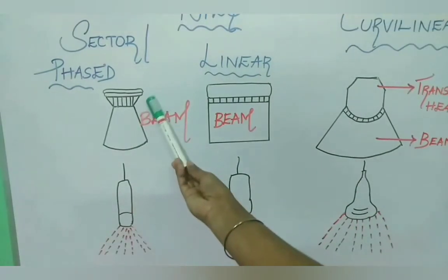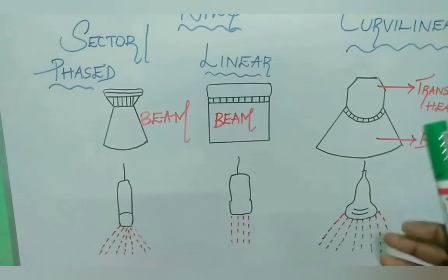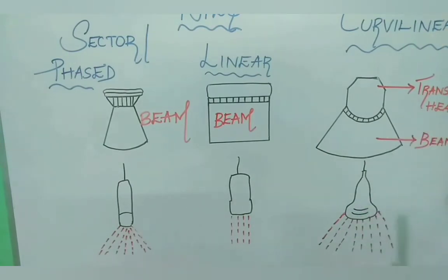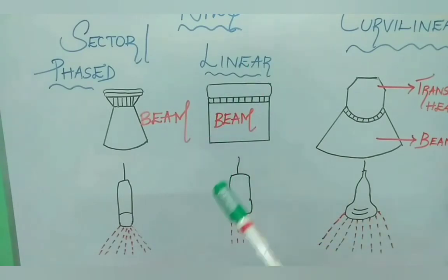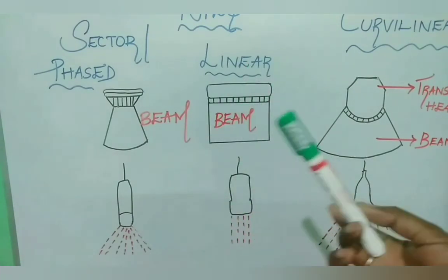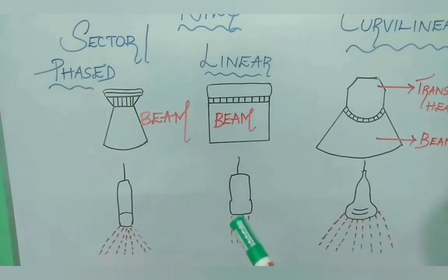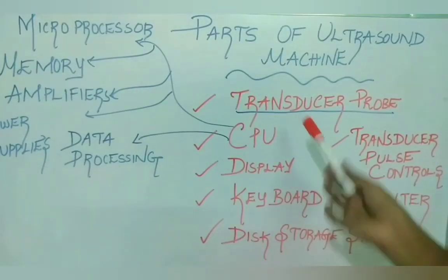Next is sector or phased array transducer probe. Phase refers to timing. Array refers to multiple elements. Here the beam is controllable because each element in this phased or sector array transducer probe can be pulsed individually at a computer calculated timing, in a programmed pattern. This type is mostly useful for cardiac imaging.